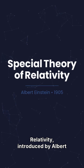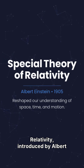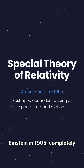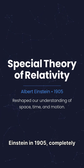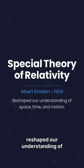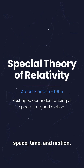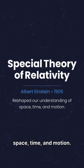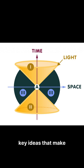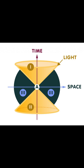The special theory of relativity, introduced by Albert Einstein in 1905, completely reshaped our understanding of space, time, and motion. In the next few minutes, let's explore the key ideas that make this theory so revolutionary.